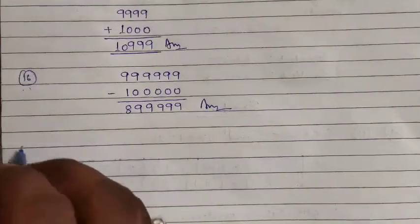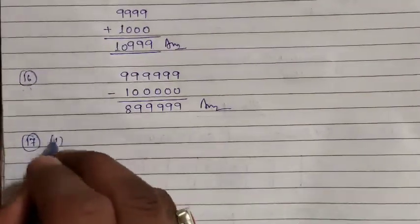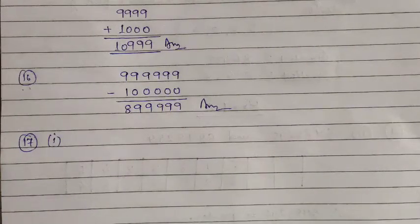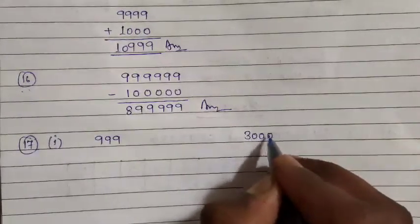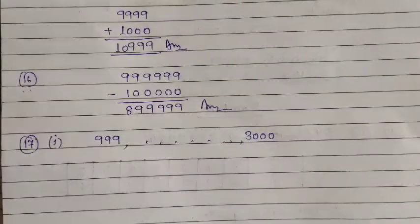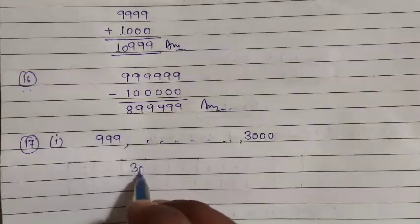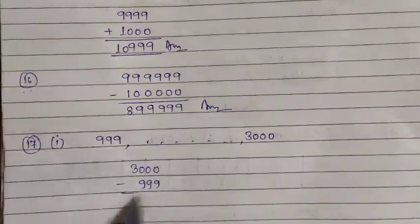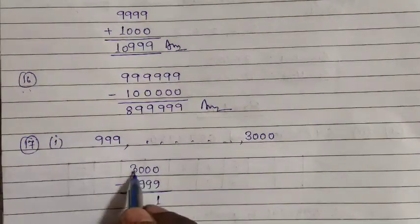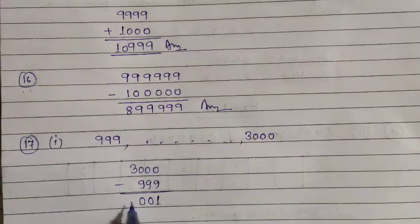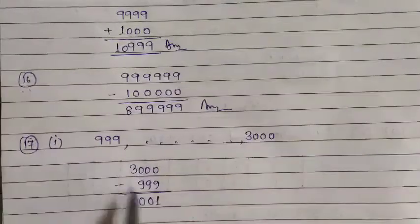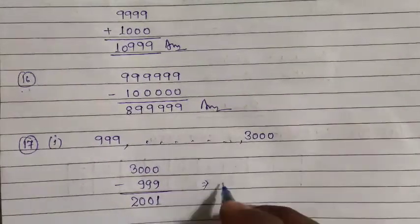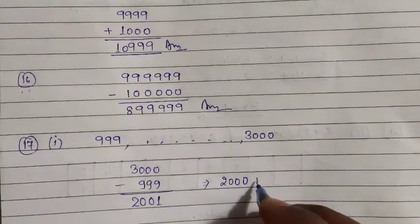Question 17, first part: How many four-digit numbers are there between 999 and 3000? We will simply subtract: 3000 minus 999. Calculating: we get 2001. But since 'between' means we exclude the endpoints, and we have included 3999 in the range, we subtract 1 from the result — the answer is 2000 numbers.